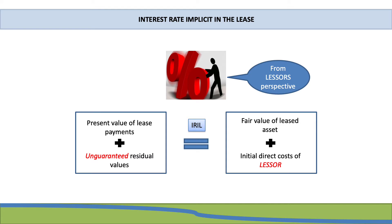An unguaranteed residual value is an estimate of what the lessor expects to receive for the asset after the lease term. The amount has not been guaranteed by the lessee at all. This amount is however taken into account when calculating the interest rate implicit in the lease, as the rate is from the lessor's perspective and the lessor expects to receive this amount at the end of the lease term. Also take note that the initial direct costs are costs directly related to the lease from the lessor's perspective.